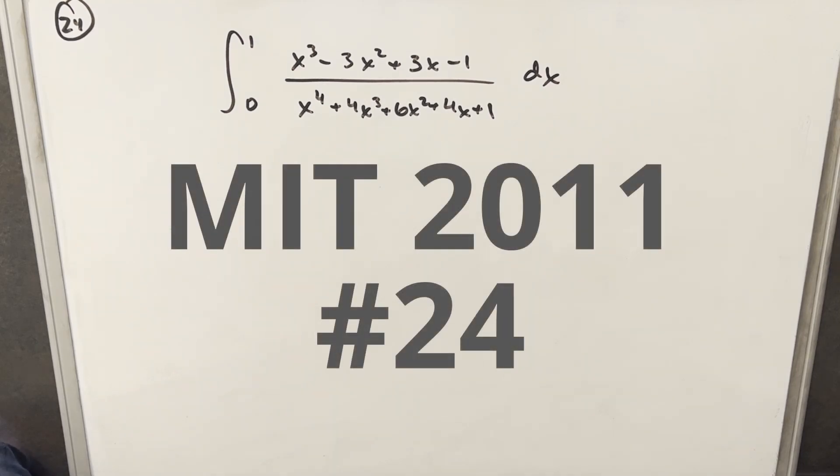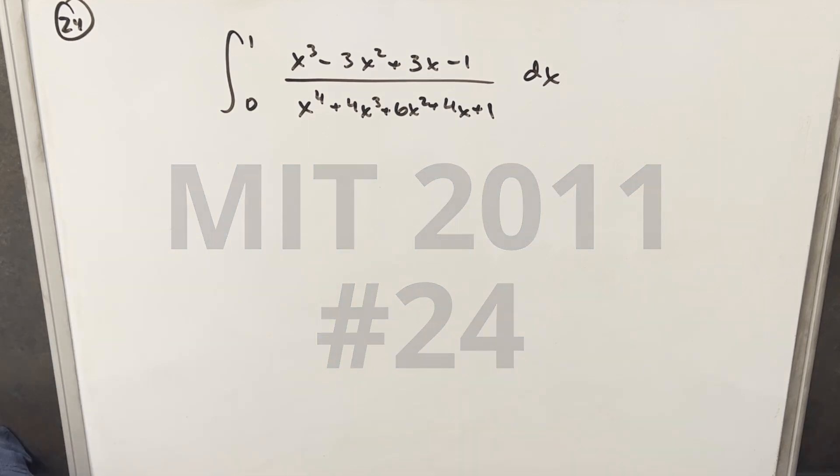Hey, I have here another integral from MIT Integration B2011, problem 24. So we have this rational integral from 0 to 1 on the board, and no special tricks really came to mind here, so I just did the straightforward thing. Let me know in the comments if you found a better way. I think my way may be a little long, but it did work, so let's try it.